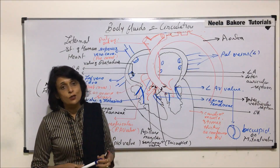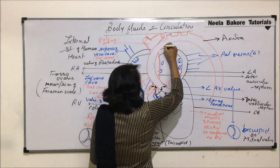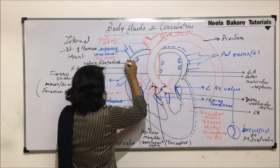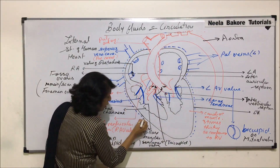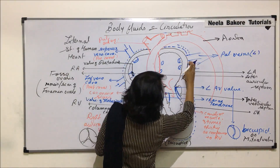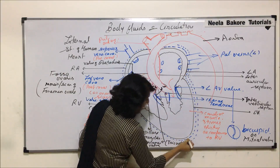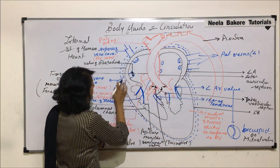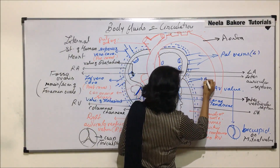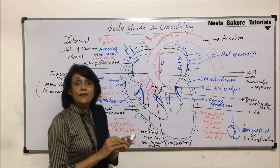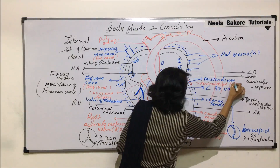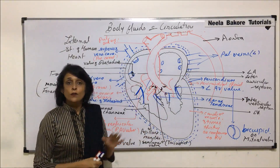Now we draw the pericardium — the outermost layer. The pericardium refers to the serous layer, which is a double membrane: the outer is parietal and the inner is visceral. Between these two layers is the pericardial fluid. We have already discussed this when talking about the wall of the heart.